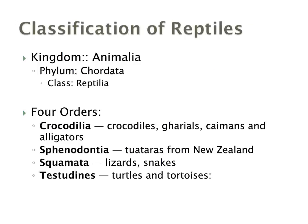Within the animal kingdom and within our vertebrates, there are four orders of Reptilia: Crocodilians, Sphenodontia, Squamata, and Testudines. We're only going to be focusing on Ontario species, of which there is one lizard, several snakes, and several turtles.